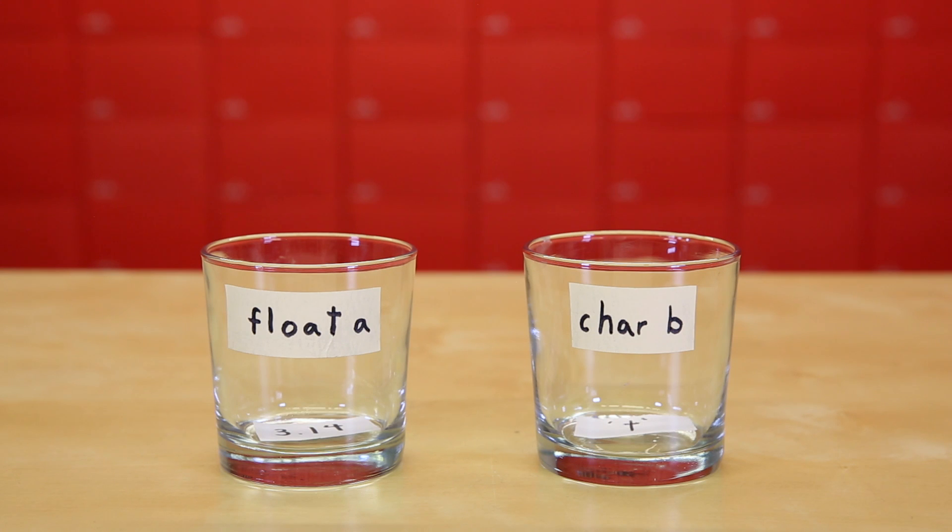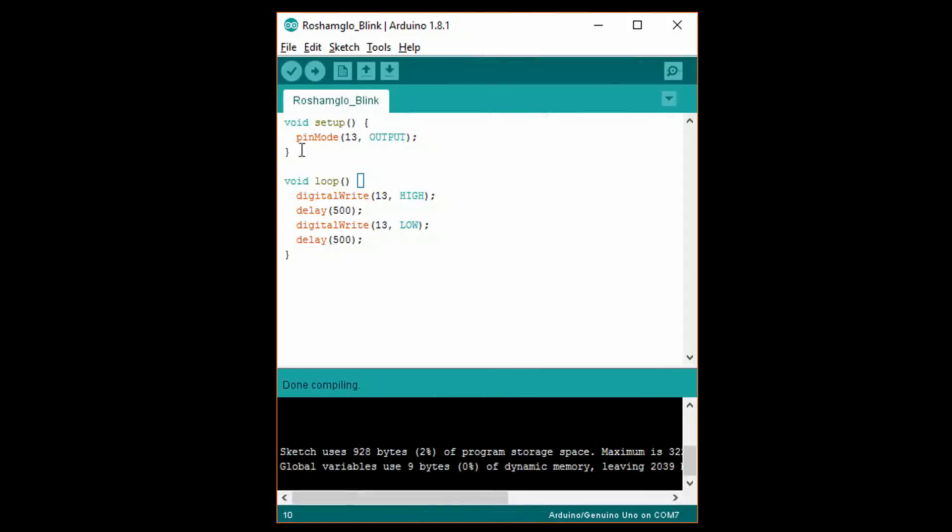Let's see how to use variables. Back in Blink, you can see that we had to write 13 three different times. We can make this code easier to maintain by using a variable. At the top of the code, outside setup and loop, write int space led. This tells the compiler we want to reserve a section of memory to store an integer. By writing it outside of setup and loop, we've created a global variable, which means that it can be accessed and changed from anywhere in the program.